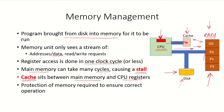This RAM has multiple processes loaded into it, and we know that protection of this memory is required to ensure correct operation. This means that no process should be able to access the address space of another process. So this protection is required for correct operation and execution of the processes.